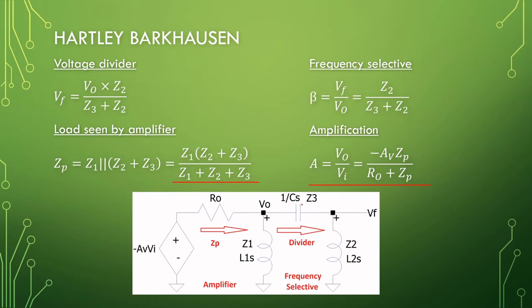For our frequency selective network, we always try to get VF in terms of Vout. So Vout towards VF is just a voltage divider over this capacitor and inductor 2. And here we have it.